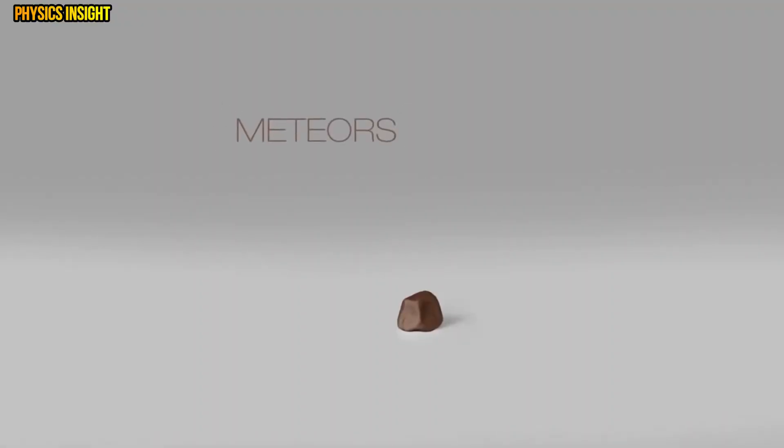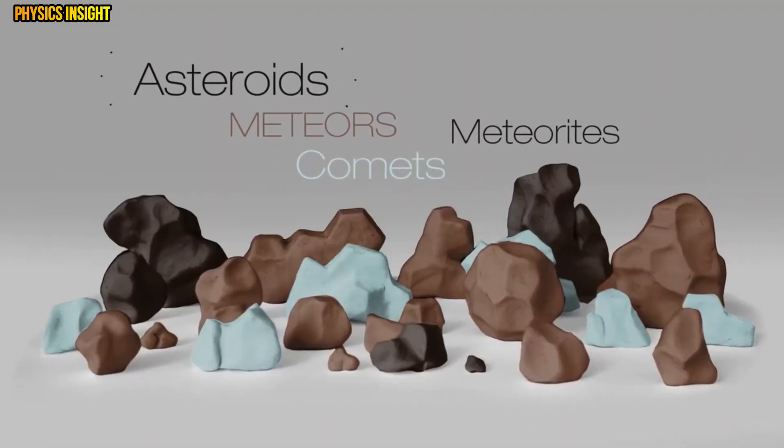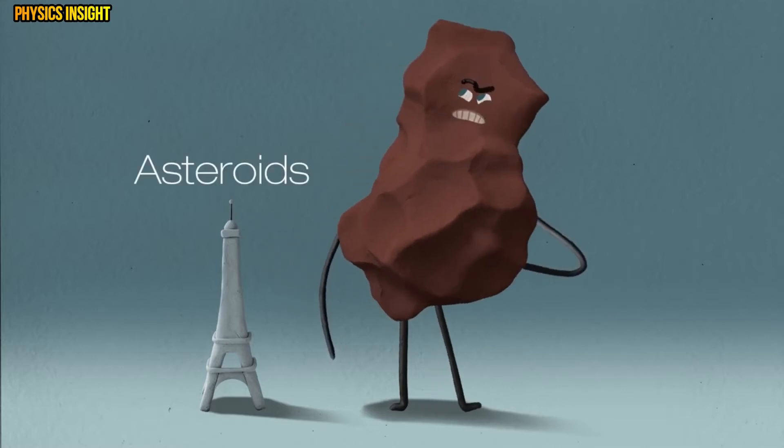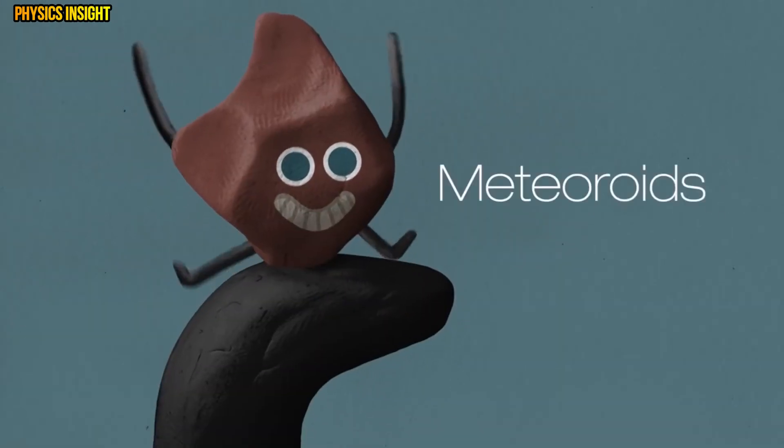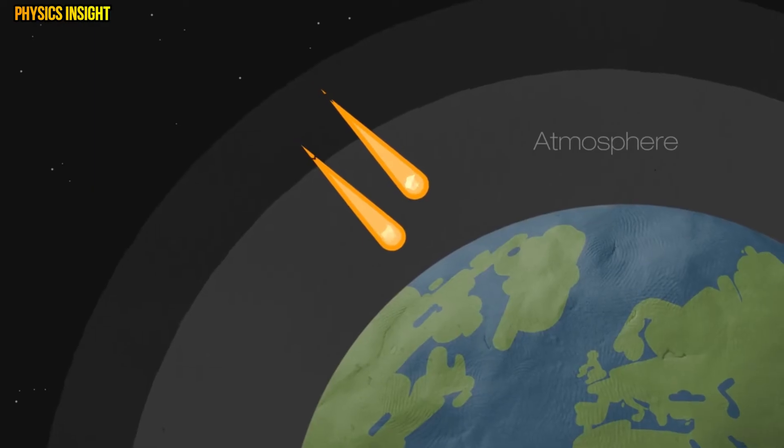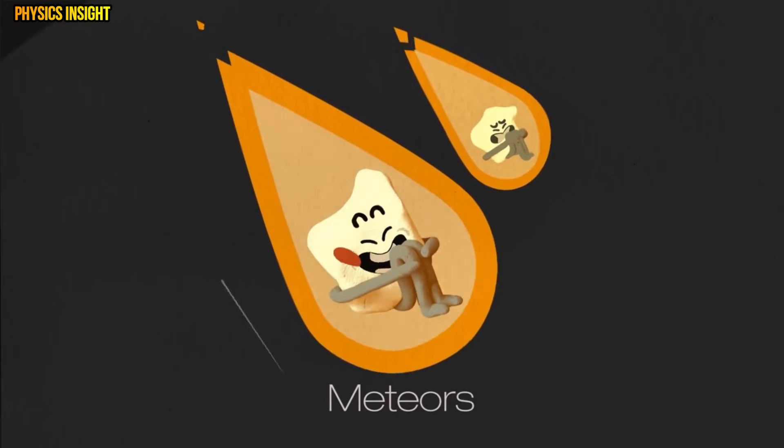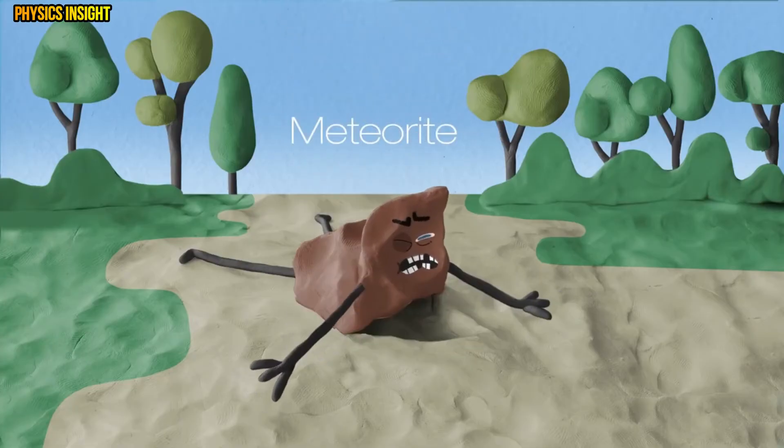There are lots of names associated with space rocks, so what's the difference? Well, the bigger rocks are called asteroids, the smaller are meteoroids. And when they fly through the Earth's atmosphere they are called meteors. If they manage to survive their burning descent through our atmosphere and land on Earth we call them meteorites.